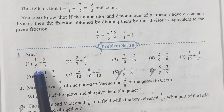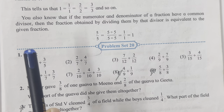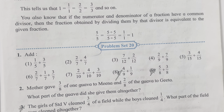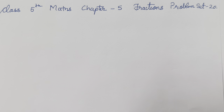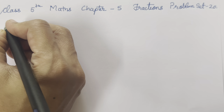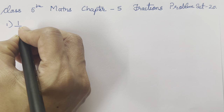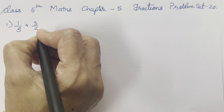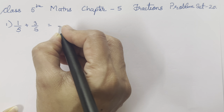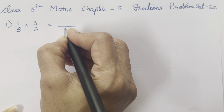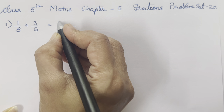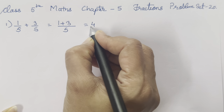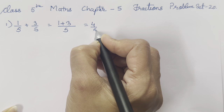So let's start with the first fraction — the addition of fractions. I will write the question. It's extremely easy. 1 upon 5 plus 3 upon 5. When the denominators are equal, you can write the denominator only once. 1 plus 3 gives us 4 upon 5.